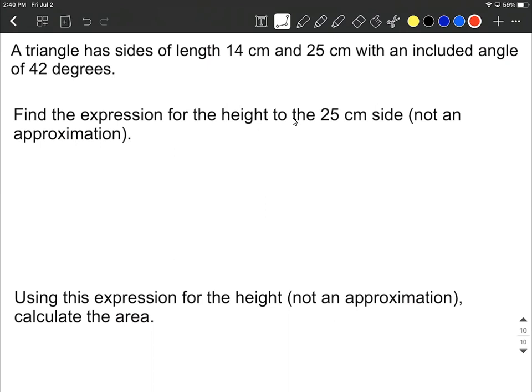So what this means by the expression for the height to the 25 centimeter side is if we draw this, the 25 centimeter side is going to be at the bottom. So go ahead and draw our triangle. I'll put the 14 centimeter side on the left hand side. It could be on the right hand side. And then we have our 42 degrees that goes in between them because it's the included angle.